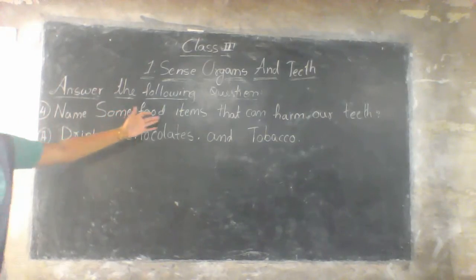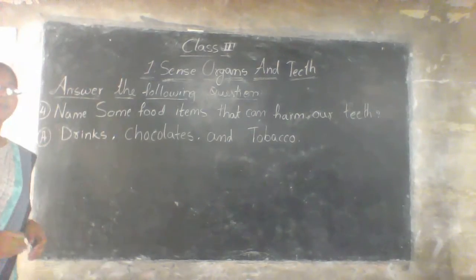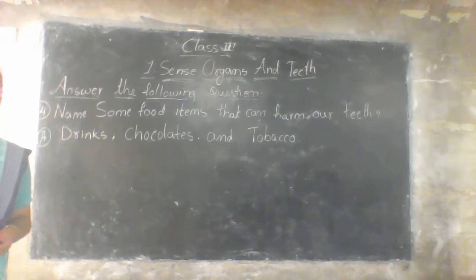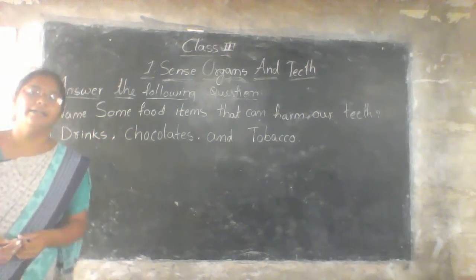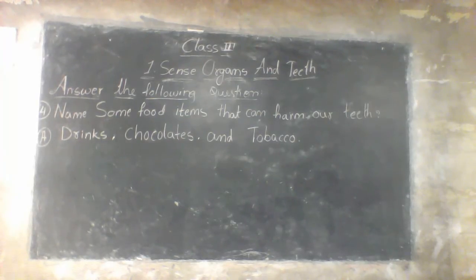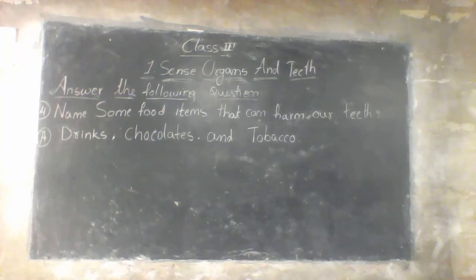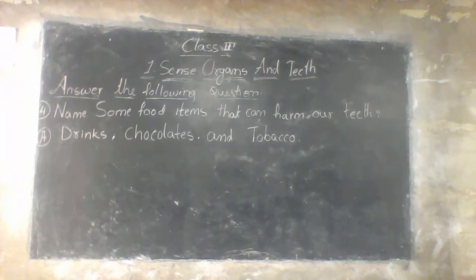Name some food items that can harm our teeth. Drinks, chocolates, and toffee. Drinks are not good for health. Chocolates are okay but don't eat too many. Toffee is also a problem — it is very harmful, not only for our teeth but for our health also. Write it in your CW neatly.